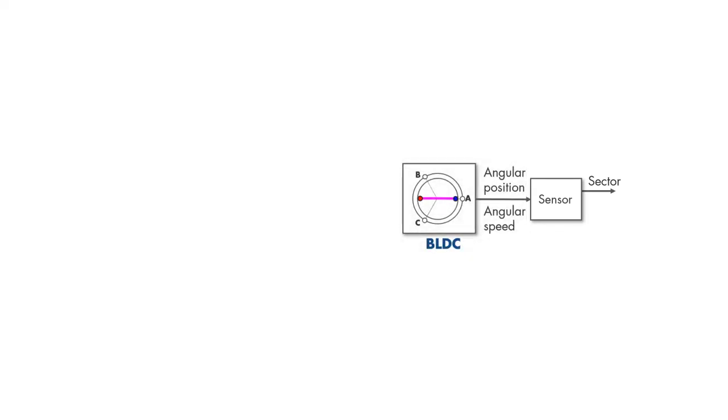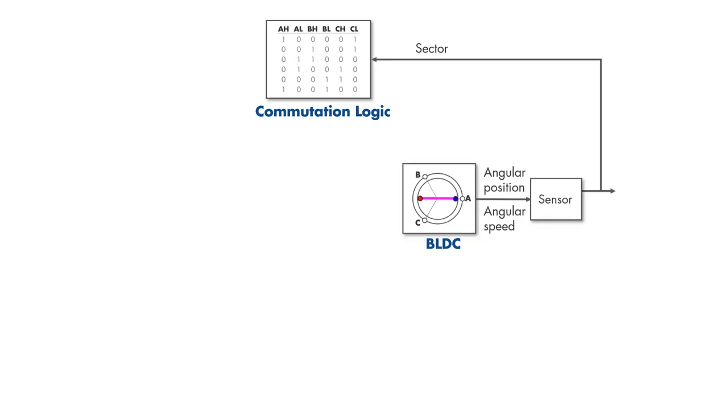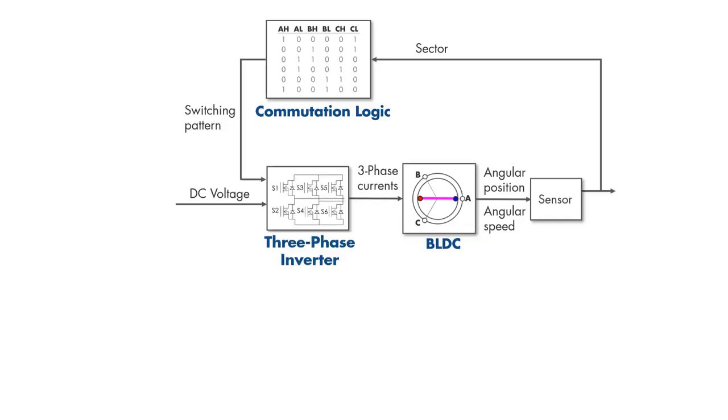But we still don't know which two out of three phases to commutate. The correct phases are specified by a commutation logic circuit that computes the switching pattern for the three-phase inverter.